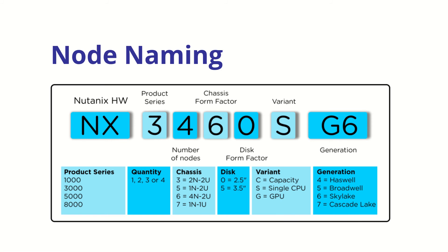The first block tells you the hardware vendor. You can see 'NX,' which means Nutanix. However, Nutanix doesn't manufacture its own hardware — they use SuperMicro hardware, so Nutanix hardware is currently SuperMicro. The second block is for the product series.